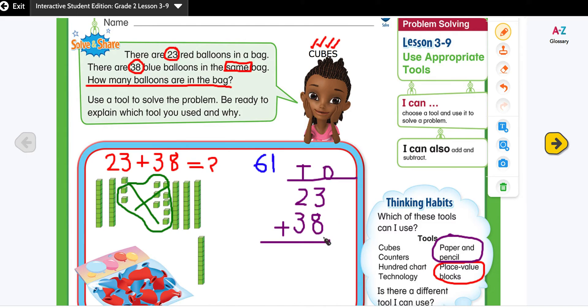We're always going to start from the ones column. 8 plus 3 is 11. 11 is a two-digit number, we need to regroup. I'm going to place the ones here and the tens on top. Now I'm going to add the tens all together. 2 plus 1 is 3, 3 plus 3 is 6. So I got 61.